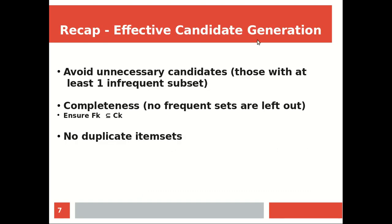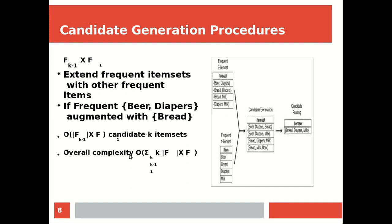اگر candidates generate کرنے ہیں تو یہ space بہت بڑی ہے — اسے reduce کیسے کیا جائے؟ سب سے پہلے unnecessary candidates جن میں ایک بھی infrequent subset ہے انہیں eliminate کر دیا، کیونکہ A-priori principle کہتا ہے کہ اگر subset infrequent ہے تو superset بھی infrequent ہوگا۔ دوسرا، ensure کرنا ہے کہ کوئی frequent item set leave out نہ ہو اور duplicate item sets consider نہ ہوں۔ Candidate generation کا ایک طریقہ ہے Fk-1 cross F1 — یعنی kth item set بنانا ہو تو k-1 level کو one frequent item set کے ساتھ extend کرو۔